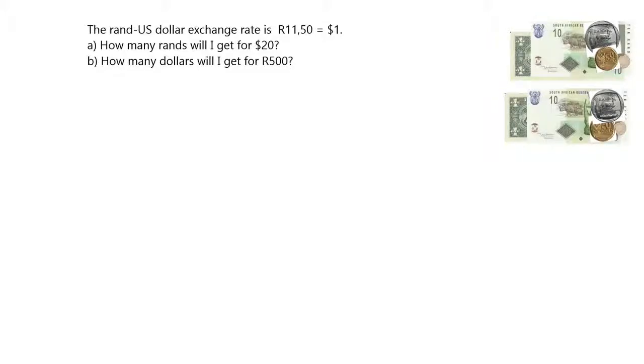Different countries around the world use different currencies, in other words, different types of money. For example, if you were in the United States of America and you were buying things, you would be using dollars. Here's a picture of a dollar. This is the money you would be using if you were in the United States of America.